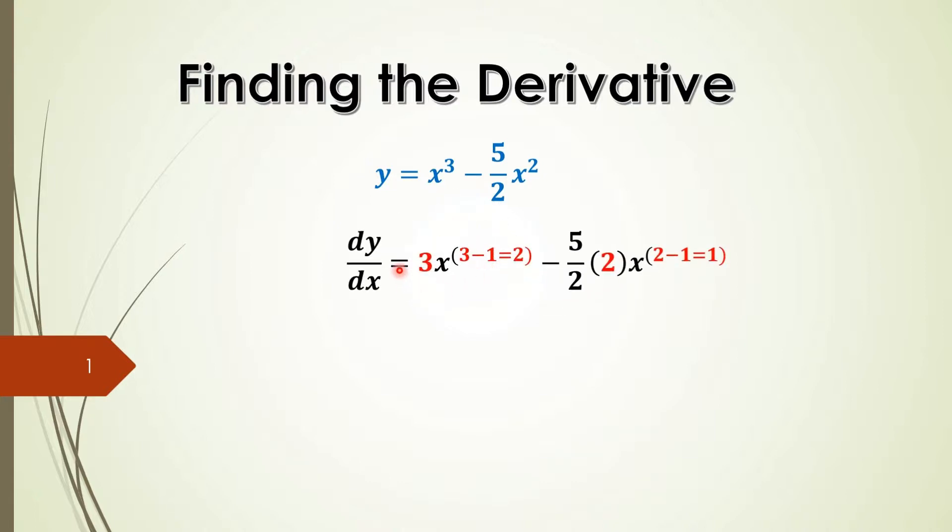And here it is. I've changed the notation to dy/dx, and of course, three times the term and reduce the power by one. So this becomes 3x squared. And for the second part of this, I'm going to multiply by two, which is right there, and reduce the power by one.